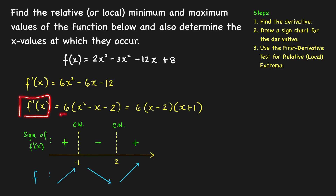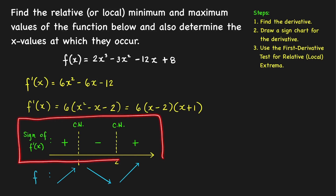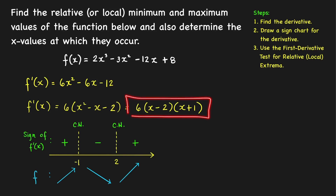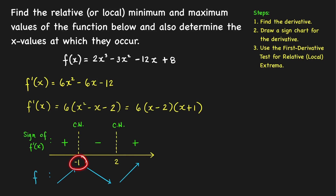We can factor the derivative more easily for the sign chart. Factor out the greatest common factor 6, giving f′(x) = 6(x − 2)(x + 1). To draw the sign chart, we find the x values where the derivative is zero or does not exist. Since the derivative is a polynomial, we set it equal to zero: x equals negative 1 and x equals 2. These are the critical numbers of f, and they divide the real line into open subintervals.